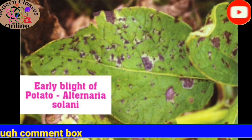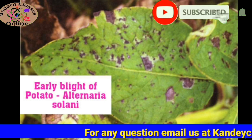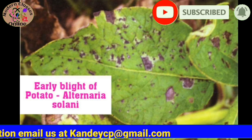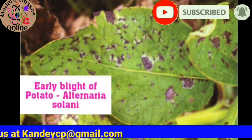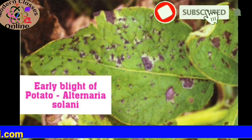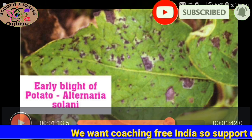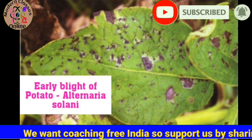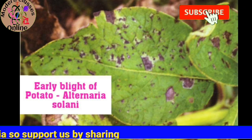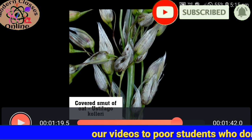There are two types of blight in potato — one is the early blight and one is the late blight. The early blight is caused by Alternaria solani. This is the early blight of potato.